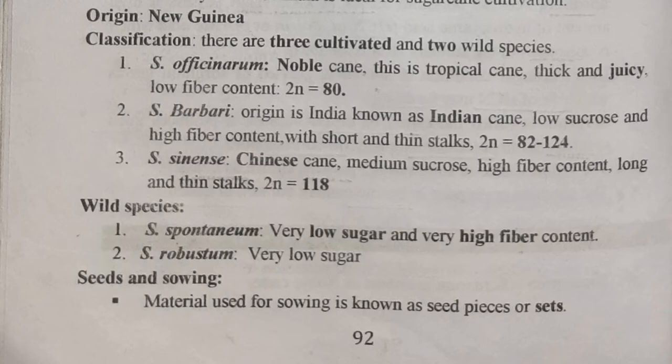The third cultivated species is Saccharum sinensis, that is Chinese cane, with medium sucrose, high fiber content, long and thin stalks, and 2n equal to 118. The two wild species are Saccharum spontaneum — with very low sugar and very high fiber content — and Saccharum robustum, which also has very low sugar.